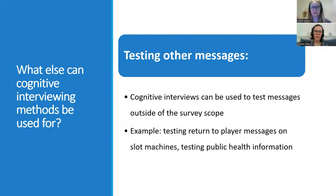What types of other messages can be tested? We have tested public health information, for example a leaflet inviting people to get their cervical screening, and return-to-player messages which appear before you play slot machines. Using cognitive testing techniques we can explore people's understanding of the messages. For the return-to-player messages we had a variety of message wording printed onto show cards. We asked people to look at them and tell us what they thought the messages meant, and also used probing questions to explore whether they had noticed the messages on the slot machines, if they read them, and if they understood them. This can help to ensure that the messages tested are clear and fit for purpose.